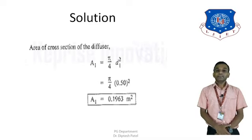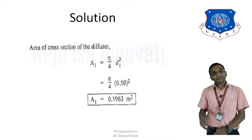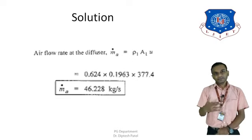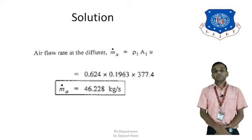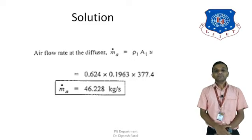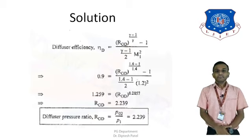The cross-sectional area of the diffuser inlet is A1 = (π/4) × D1² = (π/4) × 0.5² = 0.1963 m². The air flow rate, our third finding, is ṁ_a = ρ1 × A1 × U = 0.624 × 0.1963 × 377.4 = 46.228 kg/s.